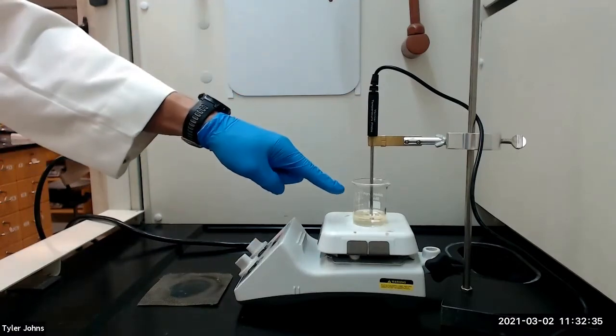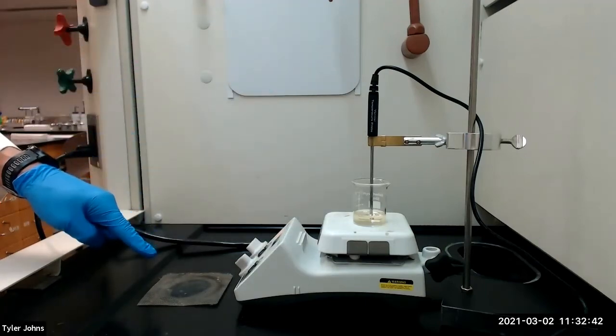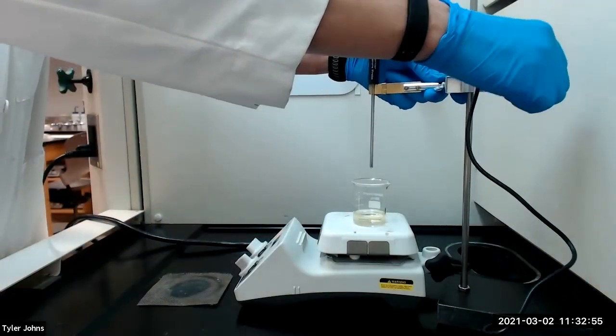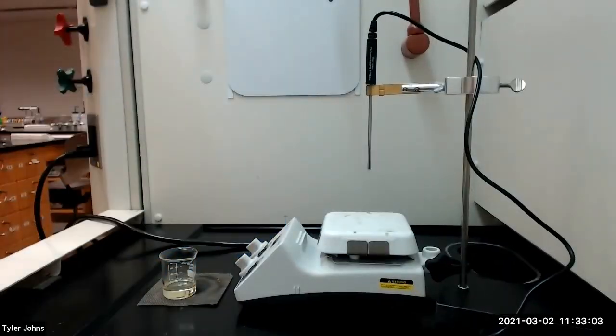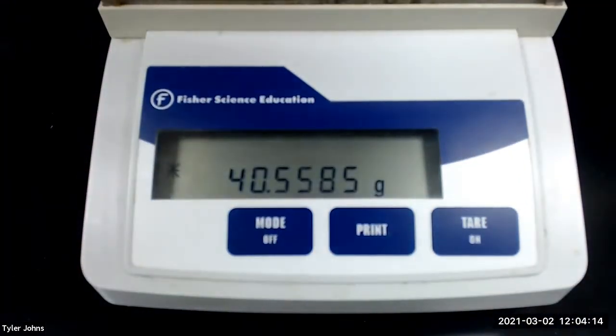After heating our beaker with our biodiesel for 15 to 20 minutes, we will next remove the beaker from the hot plate and allow it to cool to room temperature. After cooling to room temperature, the mass of the pre-weigh beaker and the biodiesel is 40.5585 grams.